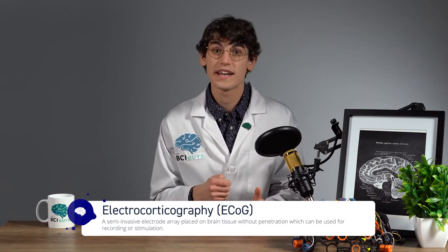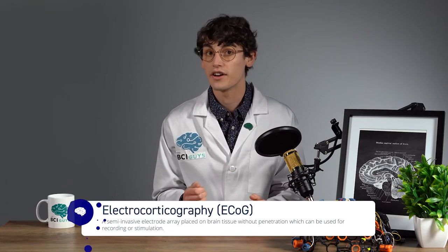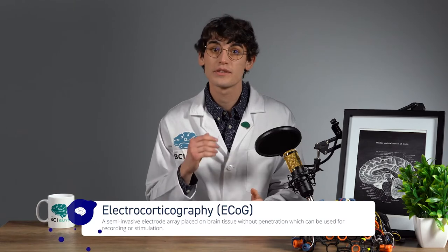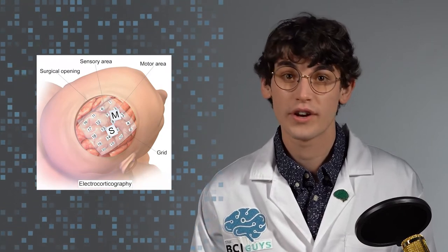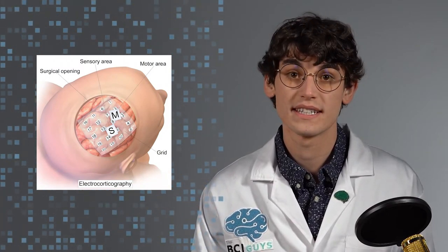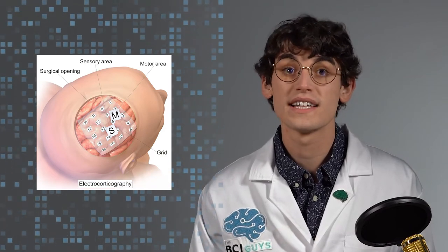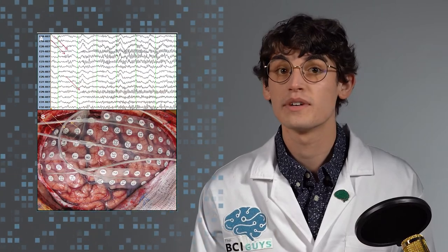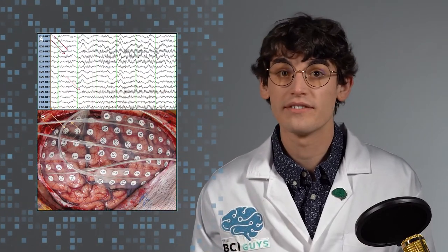The best example of semi-invasive neurotechnology is electrocorticography, or ECOG. ECOG is similar to EEG in that it measures electrical activity generated by the neurons using electrodes. However, unlike EEG, electrodes are placed directly on the brain's surface. ECOG can be used in long-term brain monitoring or for interface control where higher accuracy and more permanency is needed. It can also be used as a non-specific stimulatory technology, making it effective for the treatment of certain diseases. ECOG is often used as a compromise between non-invasive and invasive alternatives and is used in a wide variety of applications.